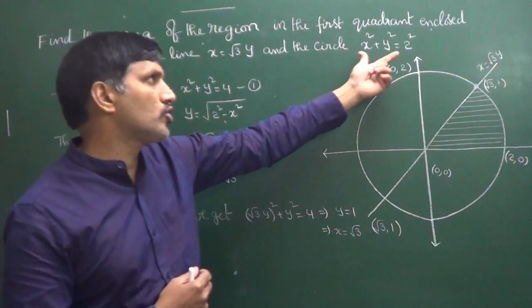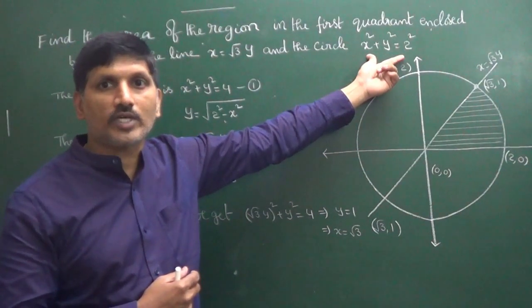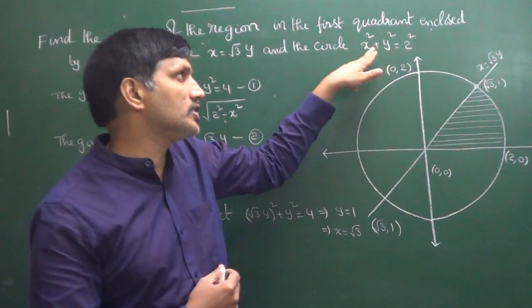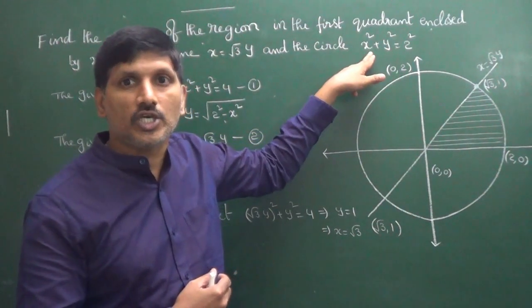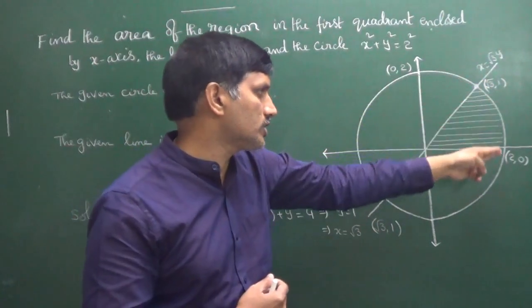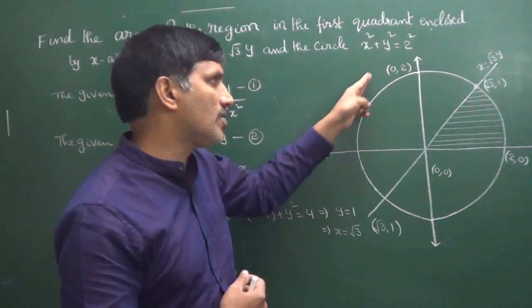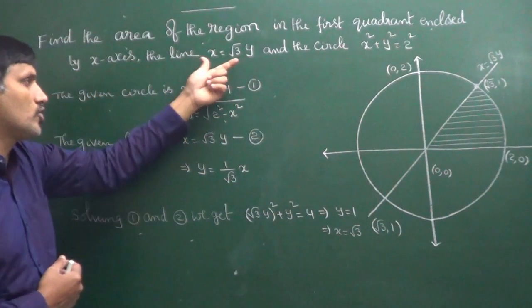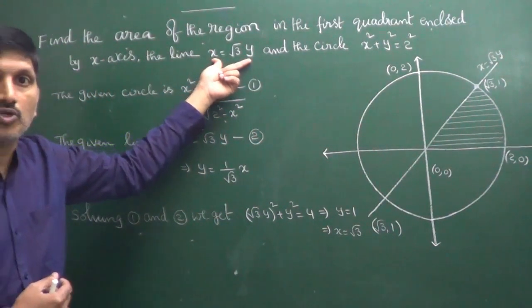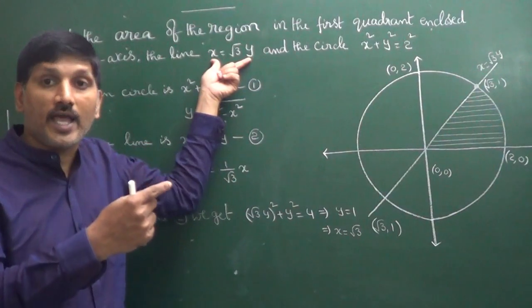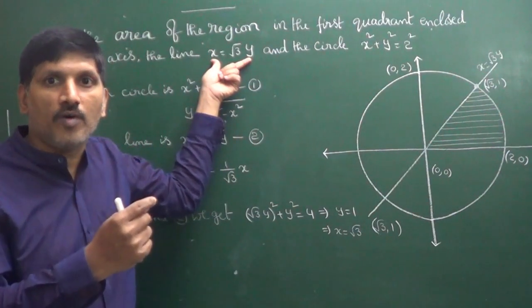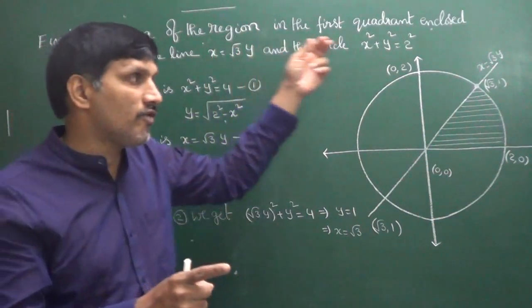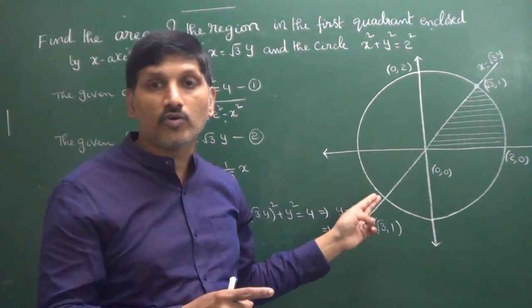The circle x² + y² = 4 represents a circle with center (0, 0) and radius equal to 2. The line x = √3·y is of the form y = mx, a straight line passing through the origin, lying in the first quadrant and third quadrant.